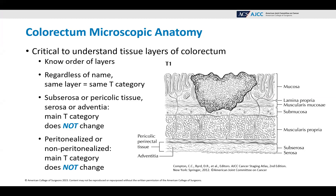It's very important to understand the microscopic anatomy of the colon and the rectum. You really have to understand the different tissue layers in order to assign the staging. You also need to know the order of the layers. Regardless of the name, the same layer is the same T category. So whether it's called subserosa, pericolic tissue, serosa, or adventitia, the main T category does not change.